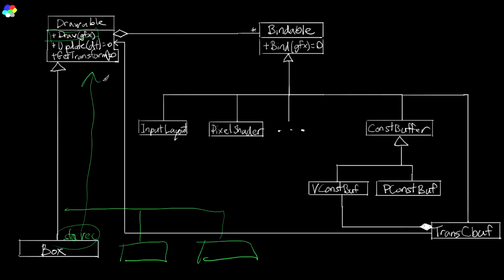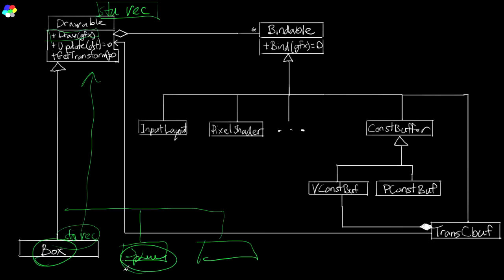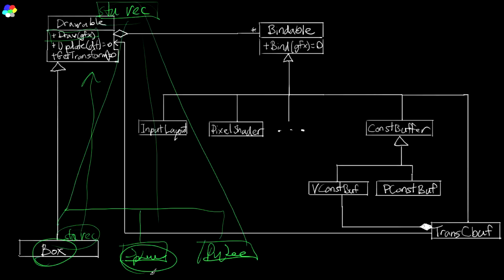You might say, well then we'll just push this static data up into the base class — put our static vector of static bindables there. But that doesn't work, because if we put the static data up in the Drawable class there will be one copy for Drawable as a base class. That means Box, Sphere, and Cube will all share the same static bindables, but we want separate static bindables for each of those derived classes.